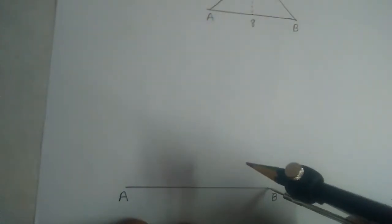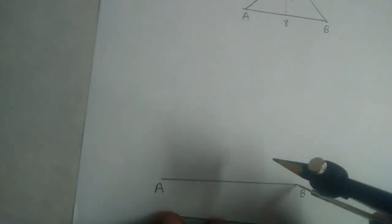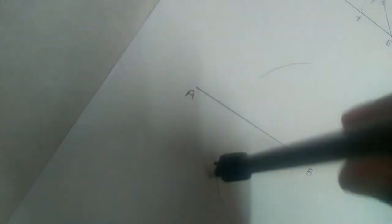Let us draw perpendicular bisector of AB. See this is approximately half. So we should take more than half of AB. So this is more than half. One arc above AB. One arc below AB.